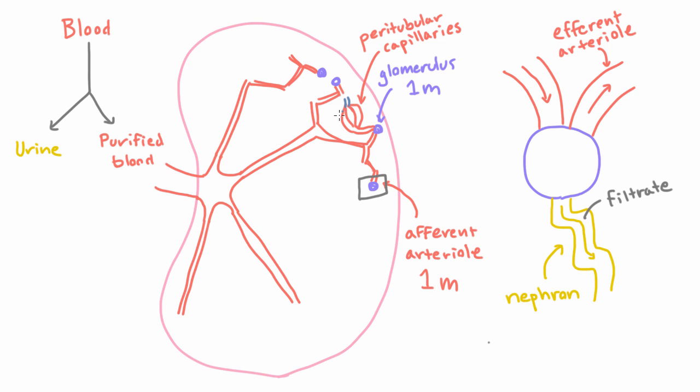And the path of venous blood getting back out of the kidney pretty much mirrors the path of arterial blood coming into the kidney. So you have bigger and bigger vessels that take blood that's joining from other vessels, and they come together.